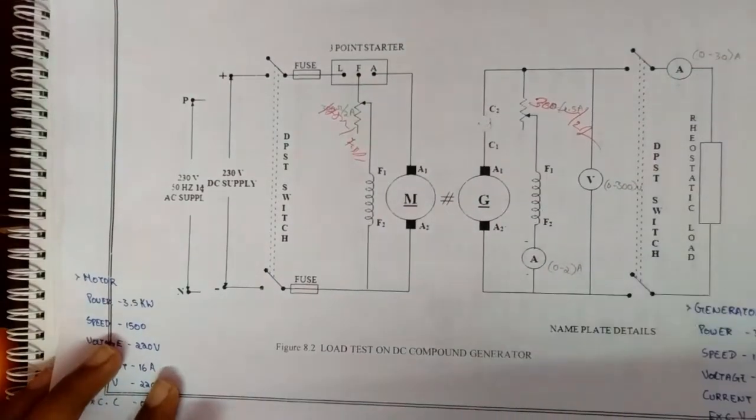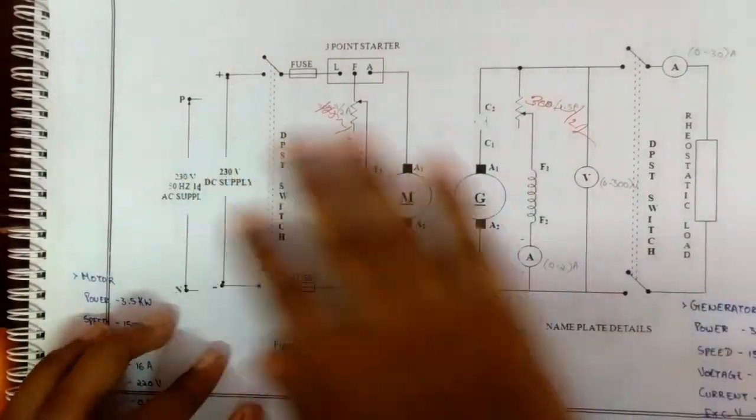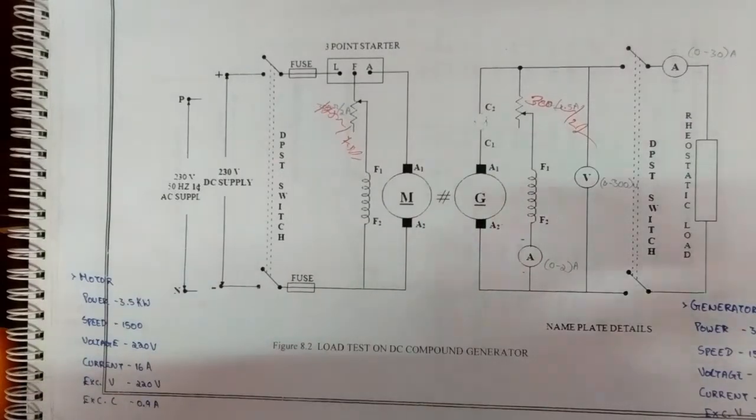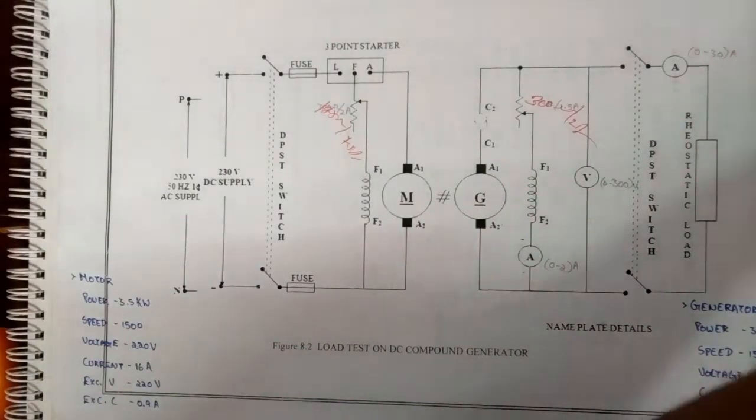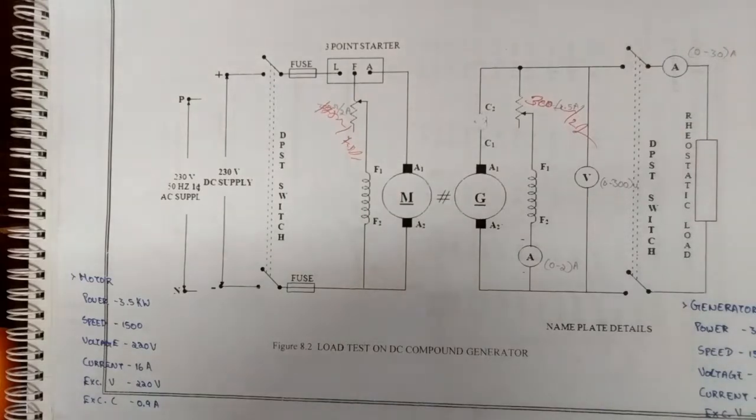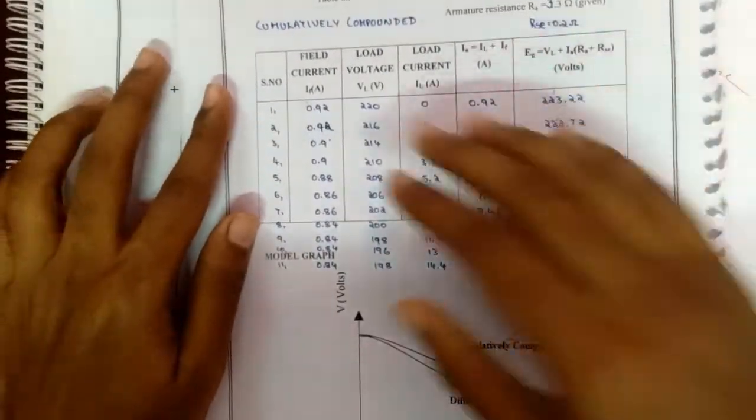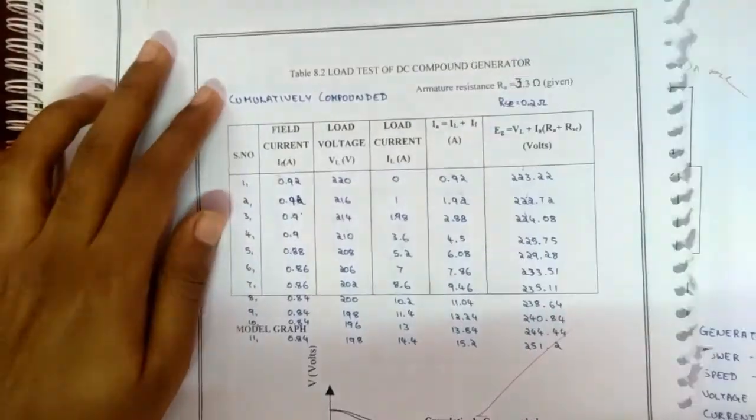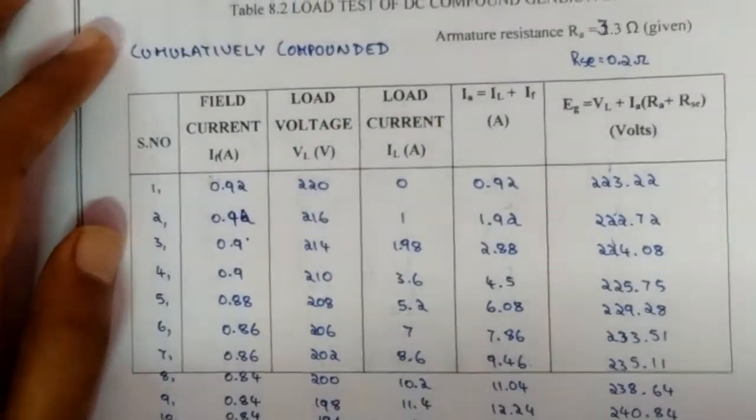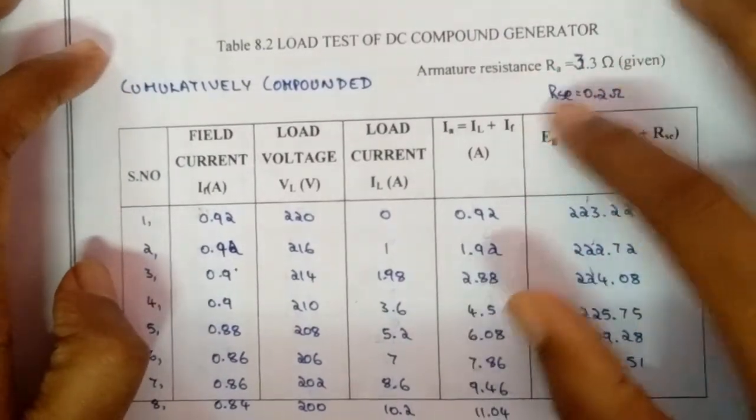For a cumulatively compound test, the circuit diagram is this one and the procedure will be the same. So the tabulation column: the armature resistance will be the same. You can see the armature resistance will be the same, RA and RSC.